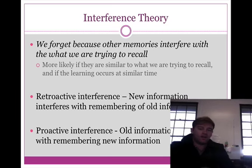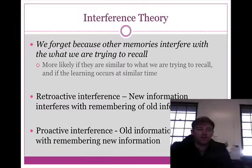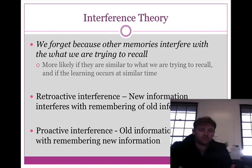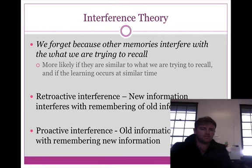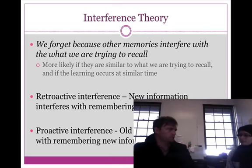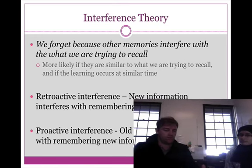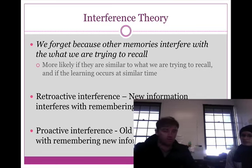The next theory is kind of what Haji was talking about before — the idea of interference. When we're thinking about the interference theory, we forget because other memories interfere with what we are trying to recall. This makes your school life difficult because every time you learn something, 75 minutes later you have to go and learn something else completely unrelated. If you go from psychology to global politics to maths, all that information you're trying to retain in your long-term memory gets jumbled up.